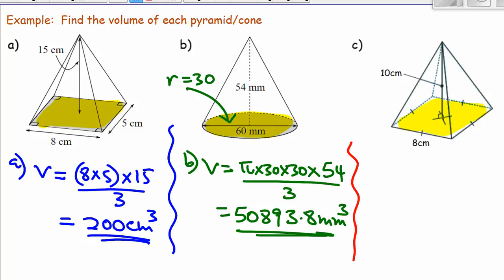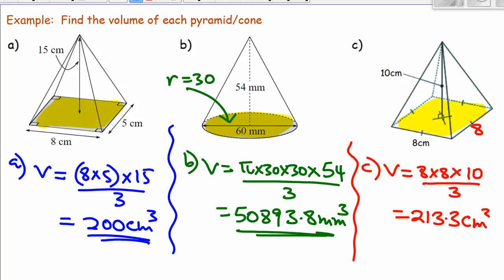For the last one, the volume will be — starting with the base, which is a square — 8 multiplied by 8, multiplied by the height which is 10, divided by 3. That gives us 213.3 centimetres cubed. So remember: identify the base, find the area of the base, multiply by the height, divide by 3. That's how you find the volume of a pyramid or a cone.